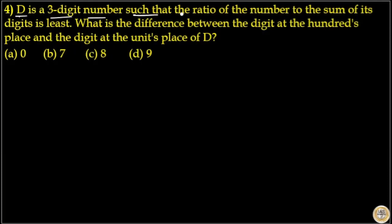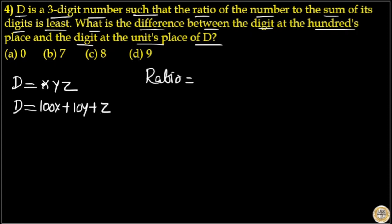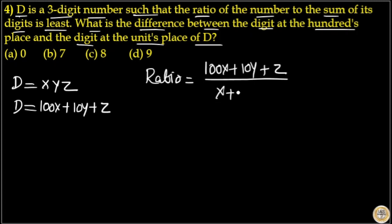D is a three-digit number such that the ratio of the number to the sum of its digits is least. What is the difference between the digit at the hundreds place and the digit at the units place of D? Let D be XYZ. I will split D as 100X plus 10Y plus Z. The ratio is D divided by the sum of its digits, that is, 100X plus 10Y plus Z divided by X plus Y plus Z.